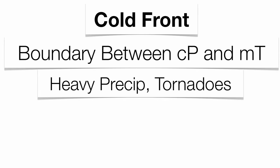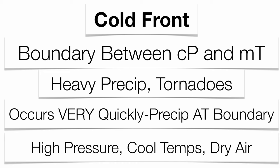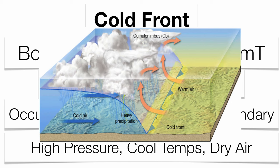A cold front is where a cold air mass is trying to overtake a warm air mass. You tend to get very heavy precipitation, tornadoes, and thunderstorms because of a very quick change in the atmosphere. Cold fronts travel very quickly, forcing warm air upward so rapidly that condensation is very violent, producing intense precipitation right at the frontal boundary. Once the air mass passes through, you get higher pressure, cooler temperatures, and much drier air. The boundary is very steep, representing a rapid change in atmospheric conditions.